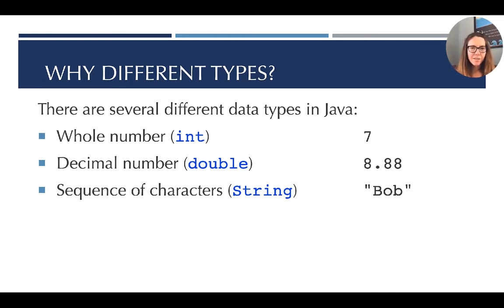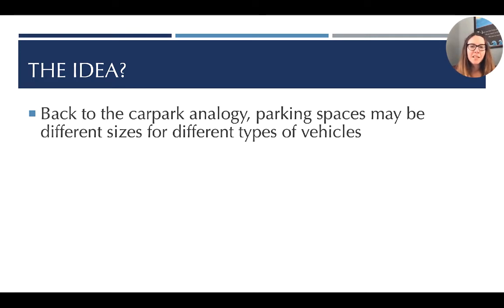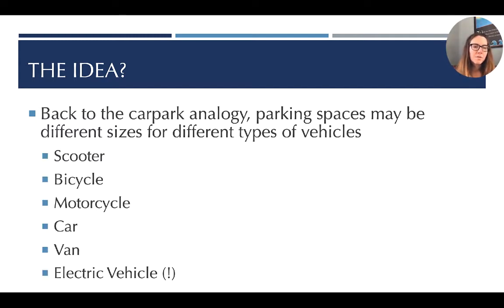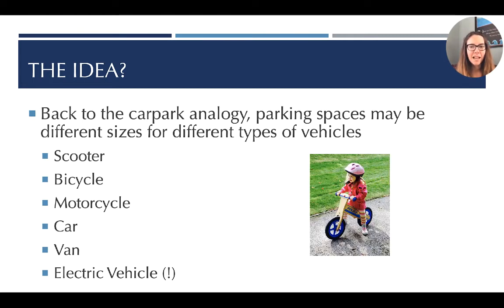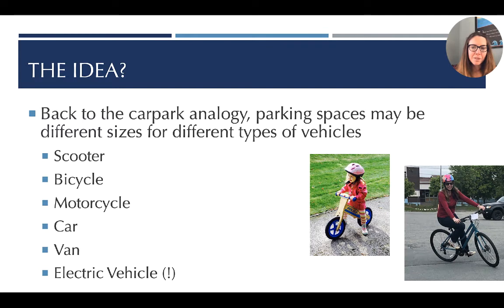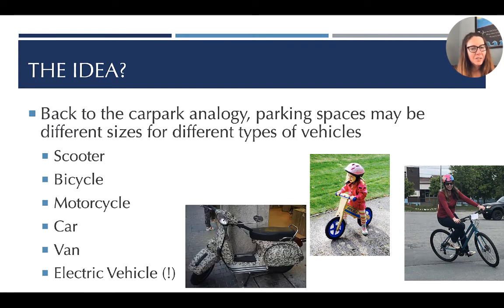So why are there different data types? The idea is that if we go back to the car park analogy, parking spaces might be needed in different sizes for different types of vehicles. If we really wanted to preserve space, the way that we store a scooter versus a bicycle versus a motorcycle, car, van, or an electric vehicle, they're all very different because they need different things. We need to treat them differently, and they come in different sizes.